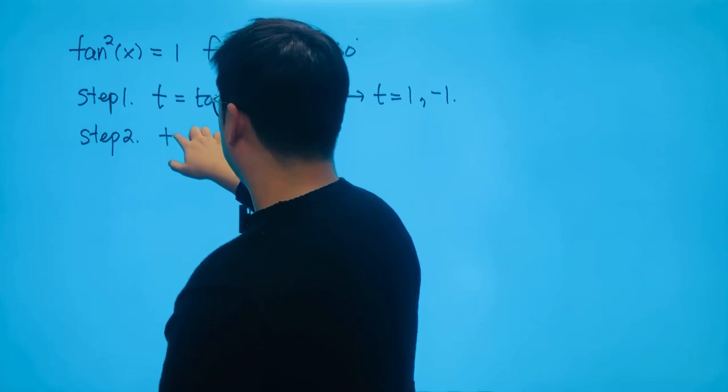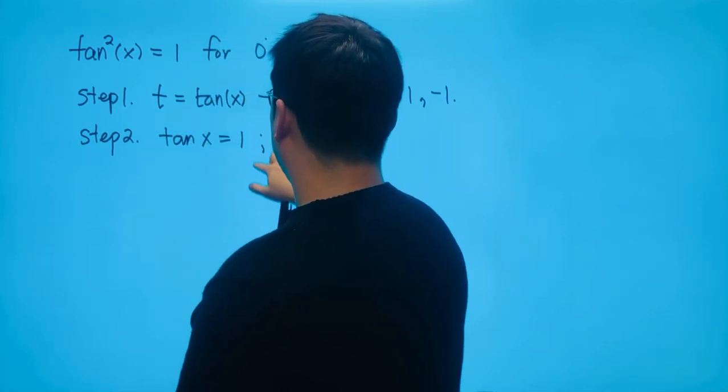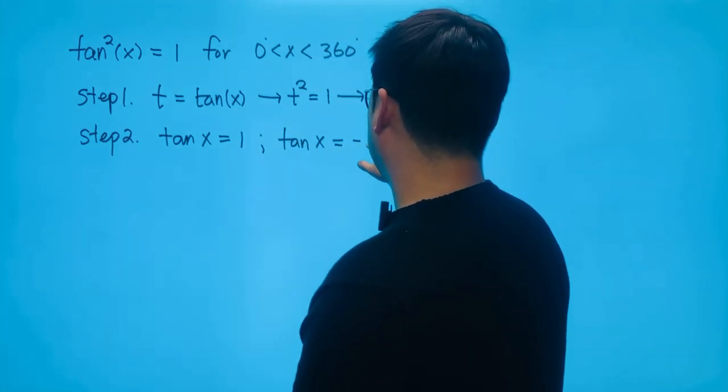So instead of this t, we're just going to write it as x. So we get tangent x equals 1, and at the same time, we get tangent x equals negative 1.